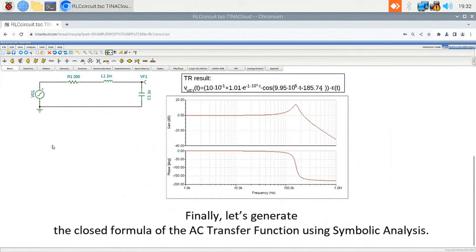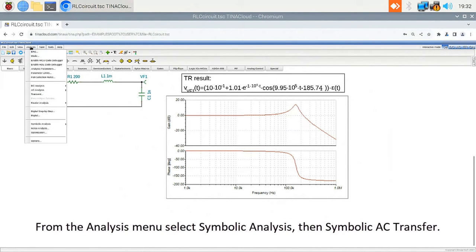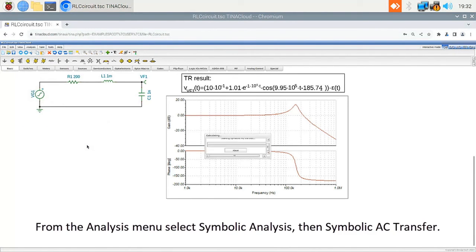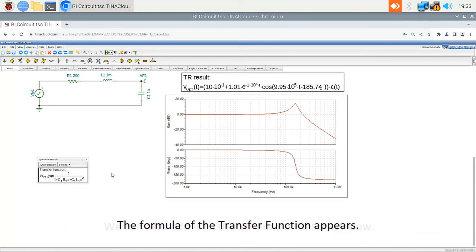Finally, let's generate the closed formula of the AC Transfer function using Symbolic Analysis. From the Analysis menu, select Symbolic Analysis, then Symbolic AC Transfer. The formula of the Transfer function appears.